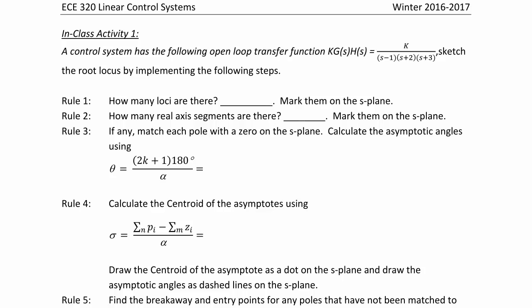Let's try an example. A control system has the following open-loop transfer function: K·G(s) = K over (s minus 1)(s plus 2)(s plus 3). Sketch the root locus by implementing the following steps.